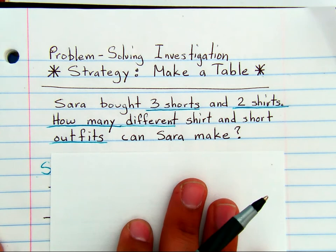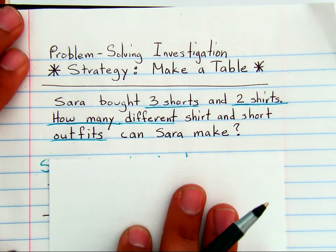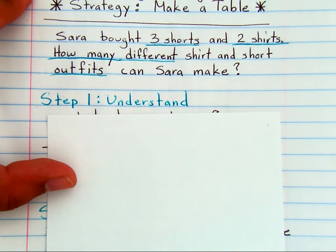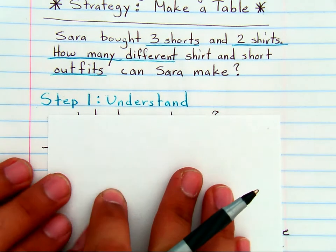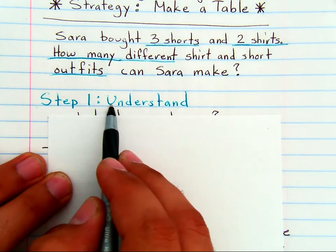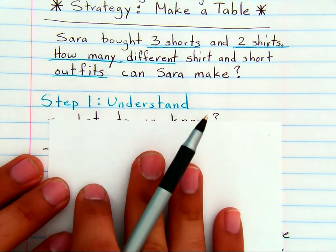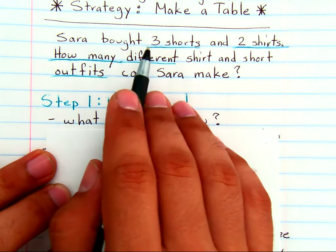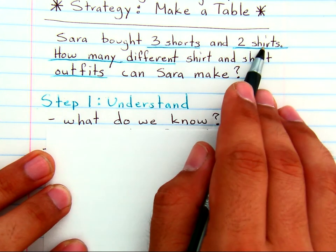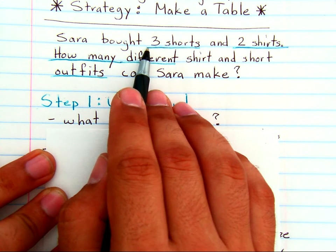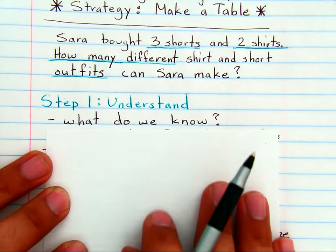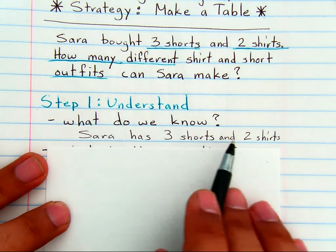In order to do this, we are going to look at a four-step process that we've looked at before, but in this case, it's going to involve making a table. In any word problem, step one is about understanding the problem. What do we know? We know that Sara bought three shorts and two shirts. Notice I underlined what we know: three shorts, two shirts. That's important.